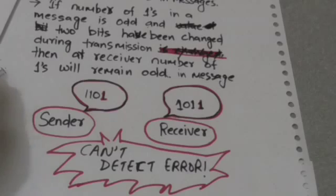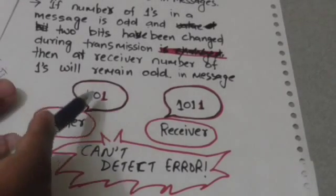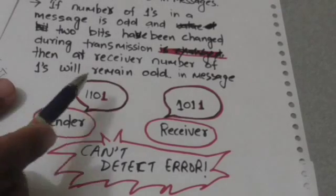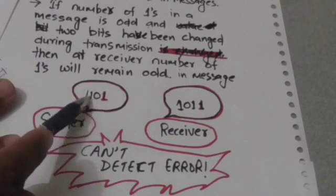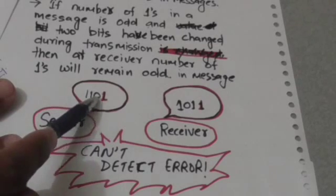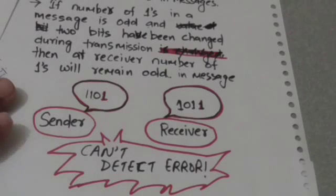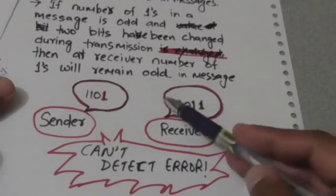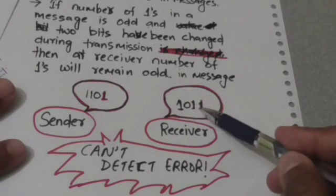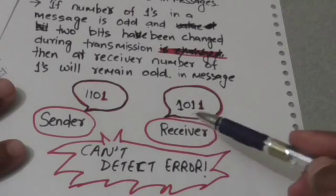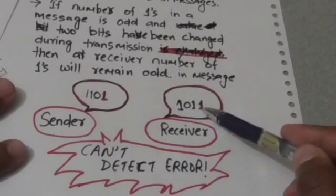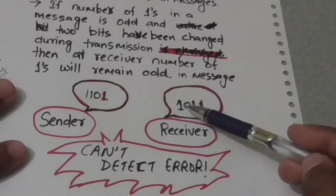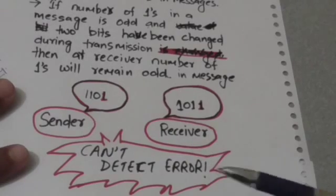For example, suppose the sender sends the message including the parity bit: 1 1 1 0 1 0 1 1, where the number of ones is odd. Now suppose these two bits get changed during transmission — this 0 becomes 1 and this 1 becomes 0. Then the receiver will receive the message 1 0 1 1. This message has an error, but it would not be detected by the parity checker because the message still has an odd number of ones. So even combinations of errors in messages are not detected by the parity method. Thank you very much.